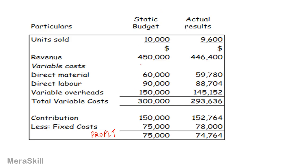This is what we budgeted at the beginning of the period. But actually we were not able to sell 10,000 units — we sold only 9,600. These are our actual results. Revenue has come down because the number of units has come down. But these costs are for 9,600 units, which is not very comparable with the costs for 10,000 units. As per our actual results, the contribution and fixed costs give us a profit of 74,764 only.